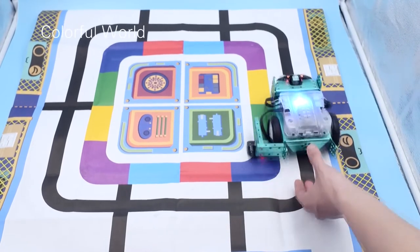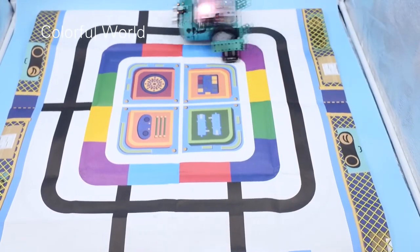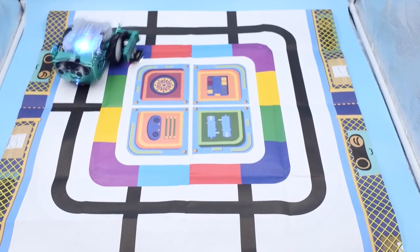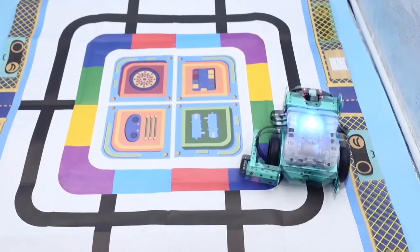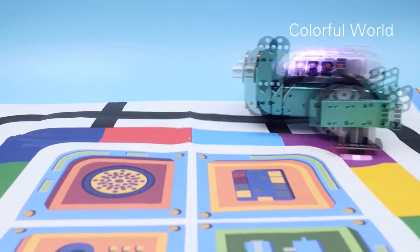This game needs to match the map. Place the car on a color map. During the movement, the full color LED light will display the color recognized by the color recognition sensor. Very pretty!